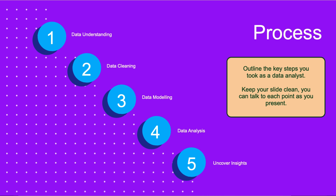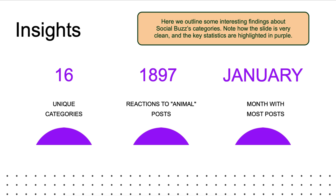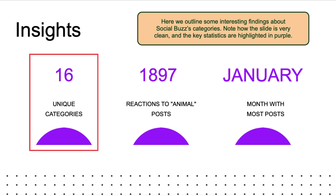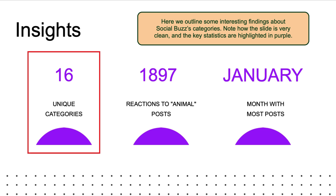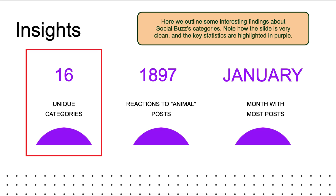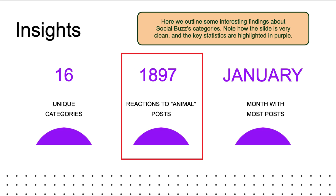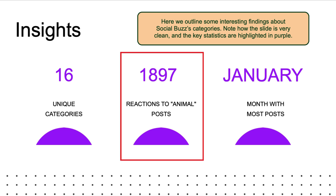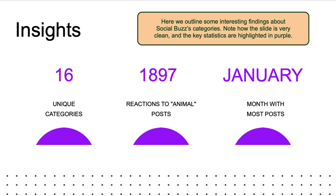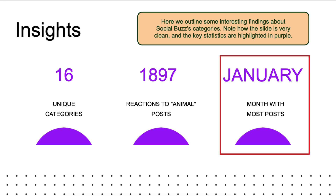Now take a look at the insights we extracted from the data. The dataset contains 16 unique categories, including food, animals, soccer, and more. The total reactions to animal posts was 1,897 — people really like animals. Also, the most common month for posts was January.